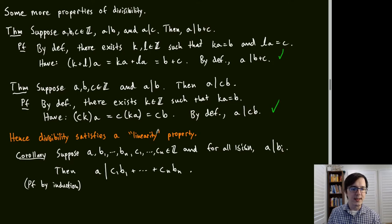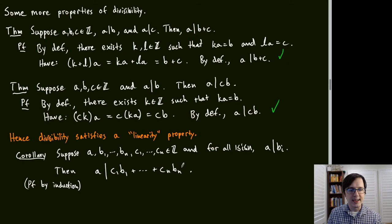More generally: if A divides each of B₁ through Bₙ, then A divides any integer linear combination C₁B₁ + … + CₙBₙ. This follows by induction and is a good exercise.